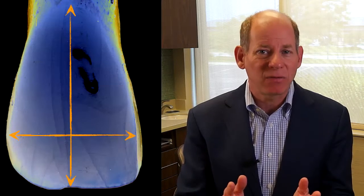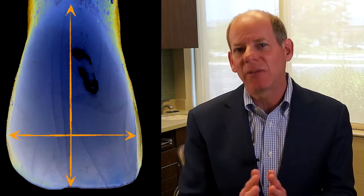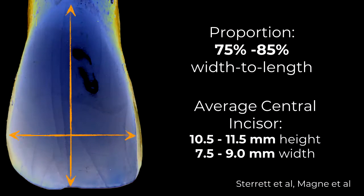The average unworn maxillary central incisor is somewhere between 10.5 to 11.5 millimeters long, based on Monnier's work. The maxillary central incisors have an average proportion of length to width — somewhere between 75 to 85 percent. So if an average central incisor is 10.5 to 11.5 millimeters long, the average width is going to be somewhere around 8.5 to 9 millimeters wide.